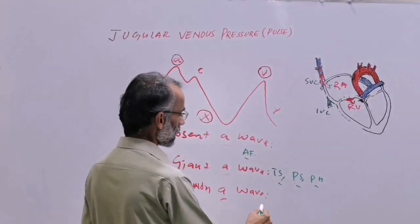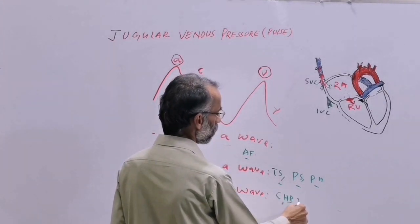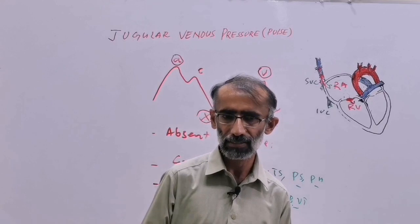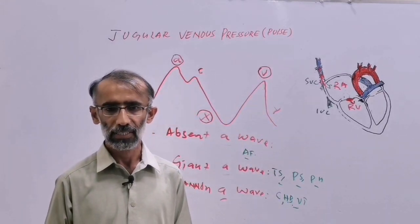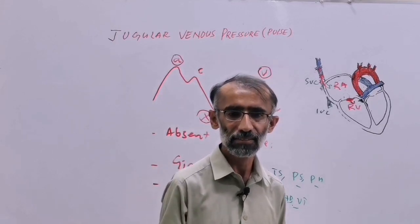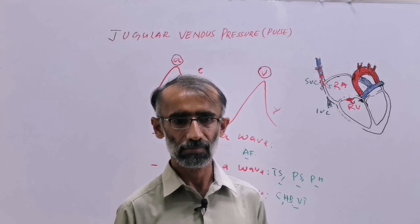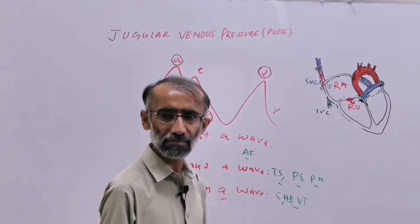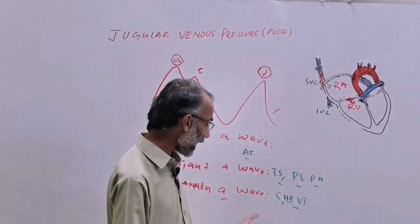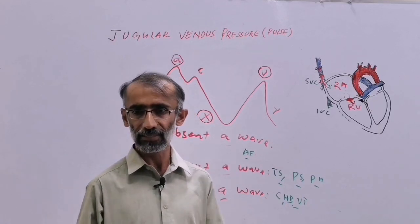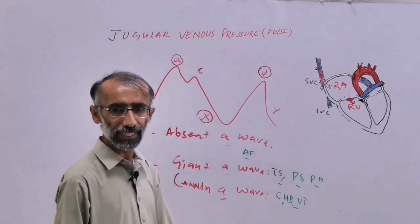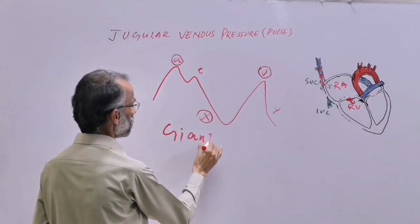Canon A wave occurs in complete heart block and ventricular tachycardia. In complete heart block, the right atrium contracts forcefully against a closed tricuspid valve. The right atrium and right ventricle are contracting independently. Canon A wave is seen intermittently as an explosive wave — it is larger than a giant A wave.